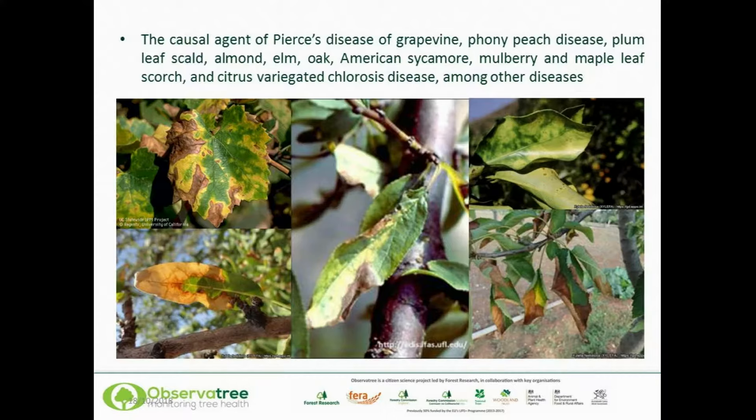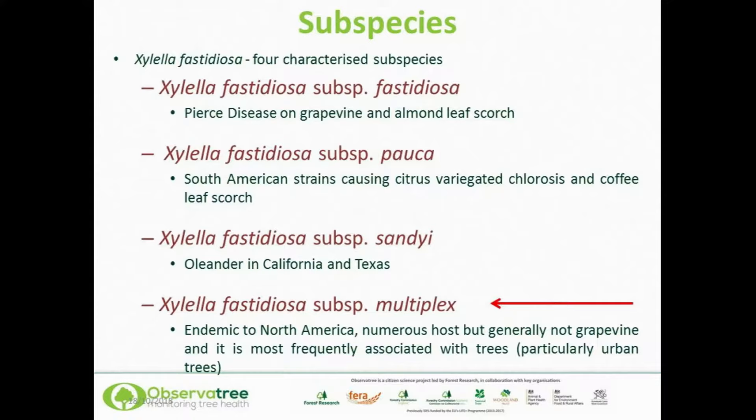Xylella fastidiosa is split into different subspecies. It's a member of the family Xanthomonadaceae of the Gamma proteobacteria. The genus Xylella contains two species: Xylella fastidiosa and Xylella taiwanensis, though Xylella taiwanensis has only been reported as causing pear leaf scorch in Taiwan. There are three widely accepted subspecies of Xylella fastidiosa: subspecies fastidiosa, subspecies pauca, and subspecies multiplex. Other subspecies have been proposed, including subspecies sandii found on Nerium oleander, and more recently subspecies morus found on mulberry.